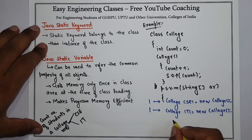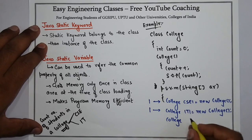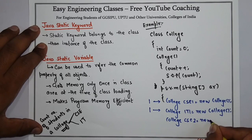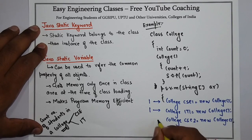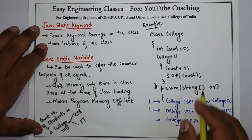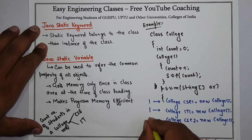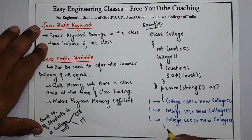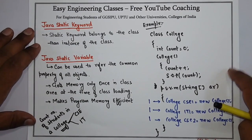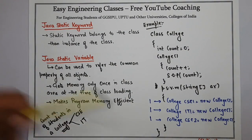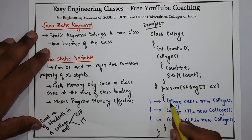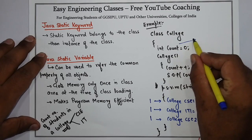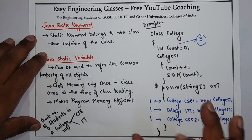Suppose again a student CSC2 comes — that is a second student of the CSC branch. CSC2 equals to new College. Since this is also a new object, it will get memory again and treat count as zero. So it will again show output as one. Now tell me whether the program is correct or not. The program is syntactically correct — it does not have any syntax error and output is coming. But the problem is that count gets incremented every time and starts from zero. But ideally, after these three admissions to the college, the answer of this variable should be three. That is the problem without using static.